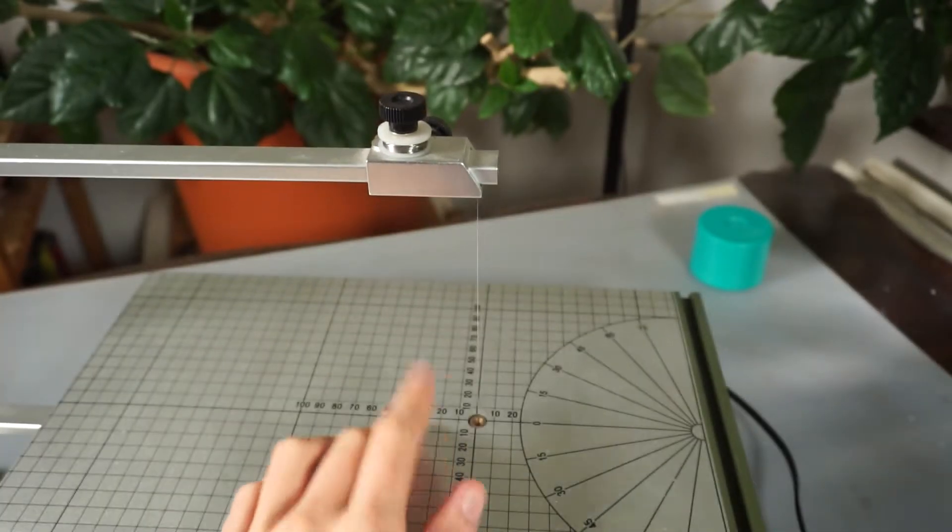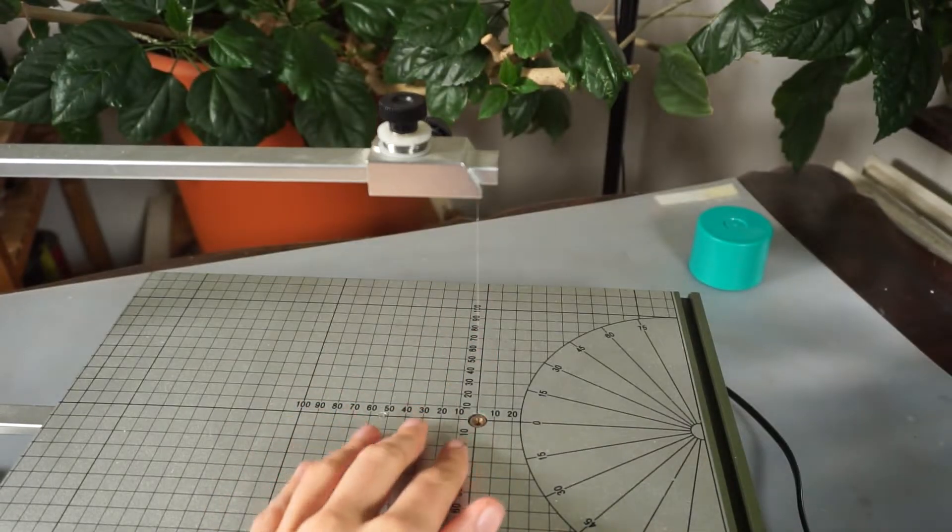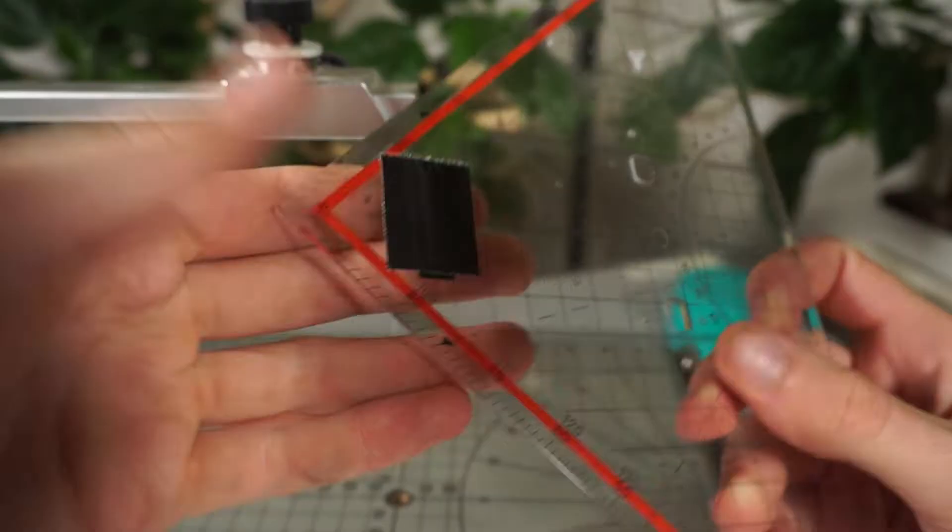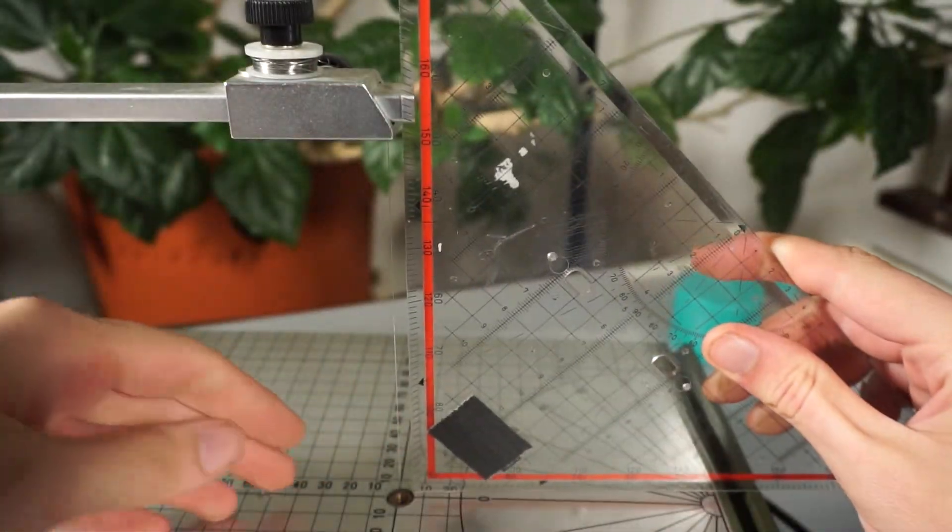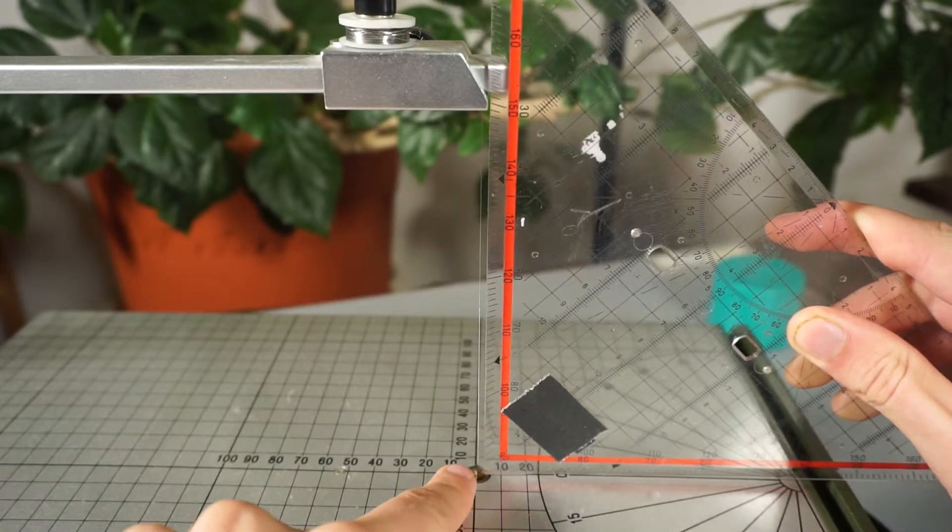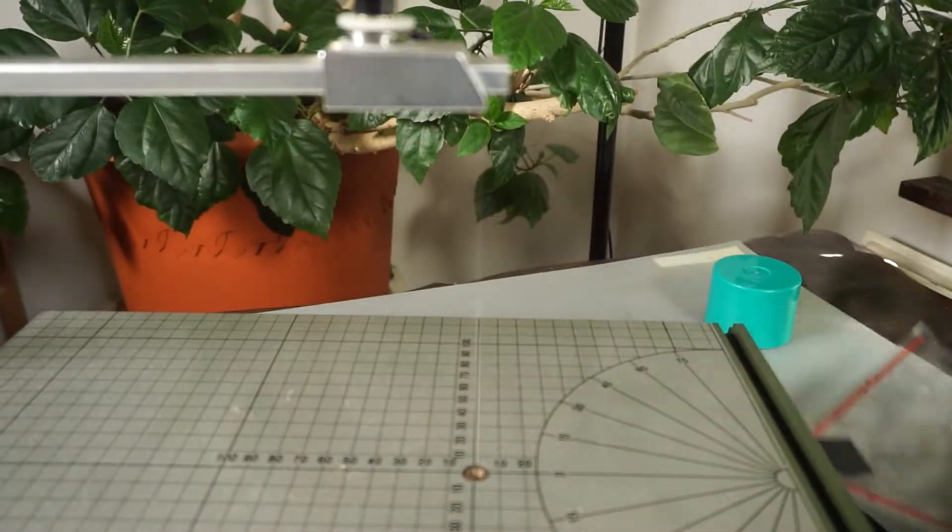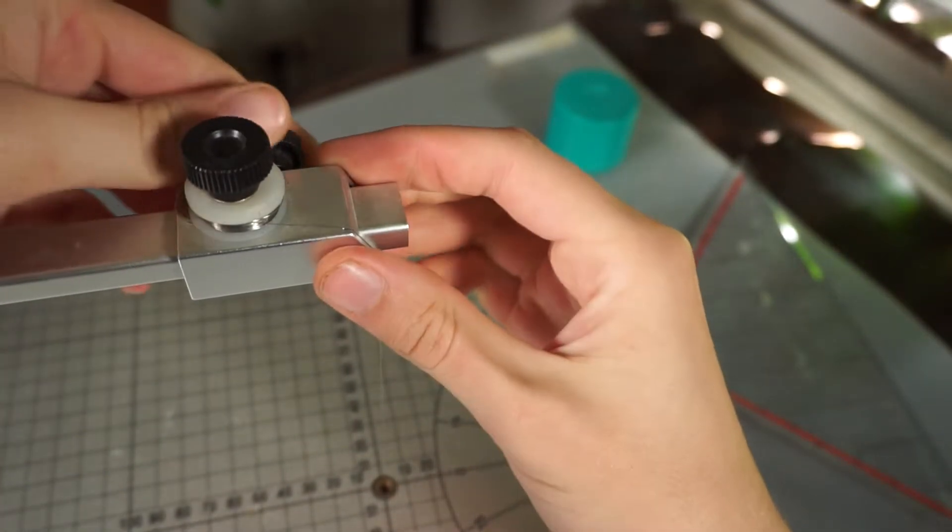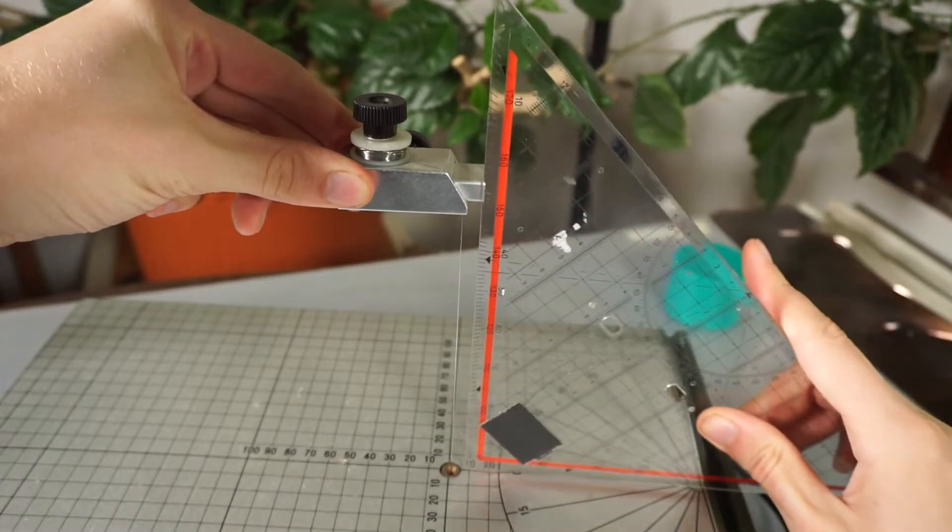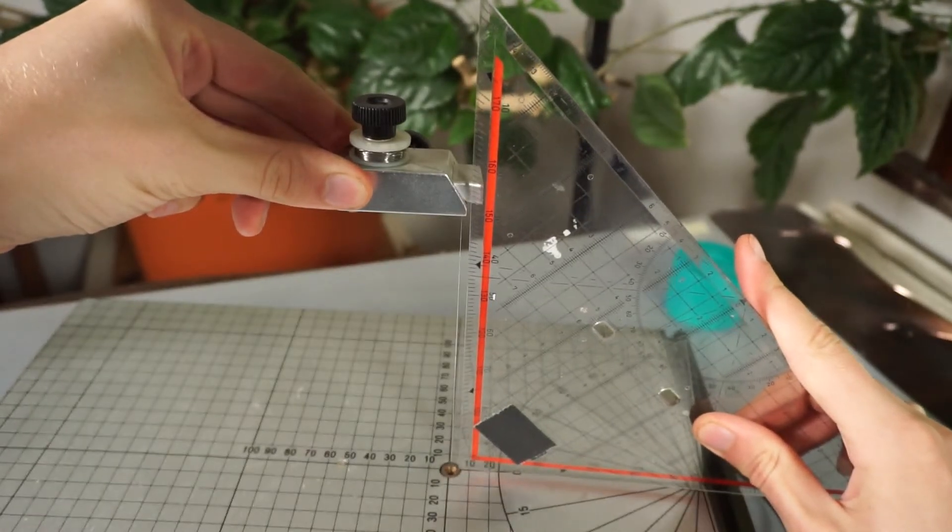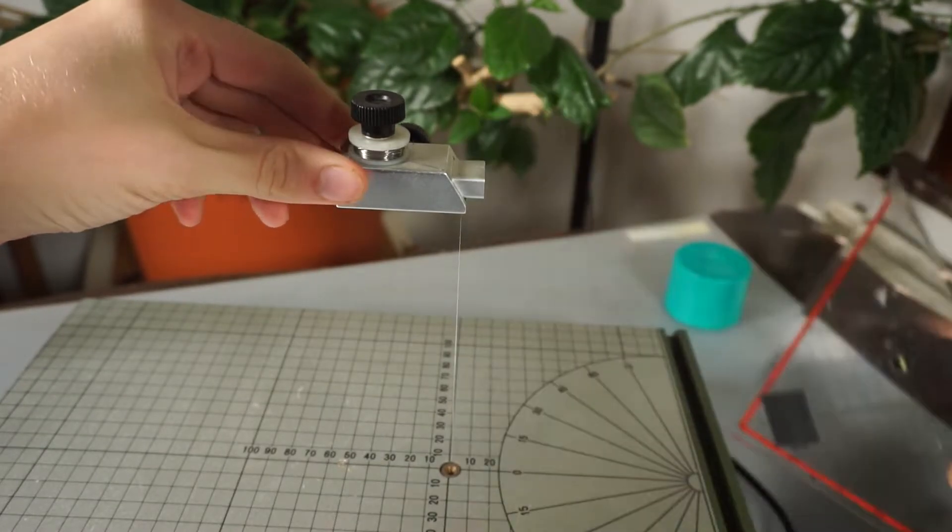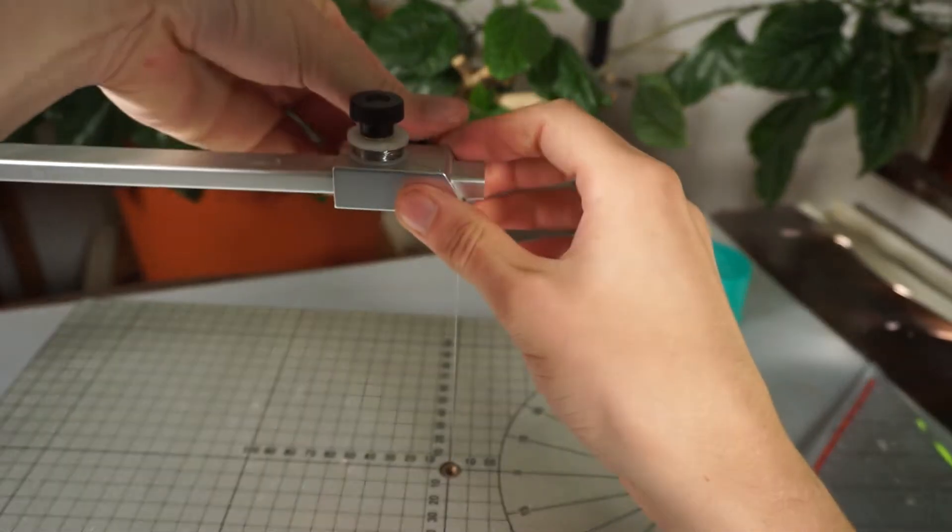And finally we'll make sure that the wire is nicely at 90 degrees to the cutting table. So let's use this right angle square to quickly check. Here we can see it's a bit angled towards the left. So to fix that there is a knob back here that you can undo. And now you can move the carriage around so that everything lines up perfectly. So now it's at 90 degrees. Tighten it back up.